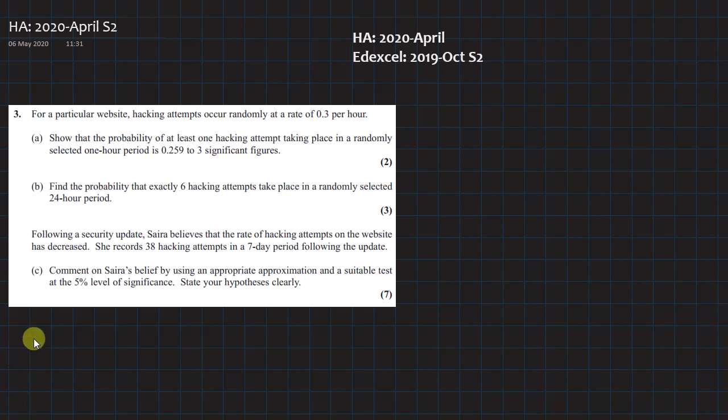The first thing to realize is we should declare our variables. So if I say X and declare it as attacks in hours, I can use this repeatedly throughout. Now we've been told that 0.3 per hour is a rate. As soon as you see the word rate you start thinking lambda. So lambda equals 0.3.